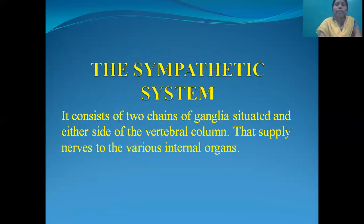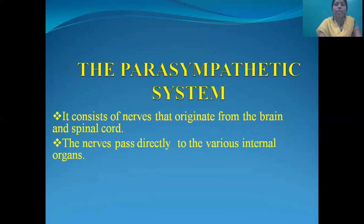The sympathetic system consists of 2 chains of ganglia situated on either side of the vertebral column that supply nerves to the various internal organs. The parasympathetic system consists of nerves that originate from the brain and spinal cord, and these nerves pass directly to the various internal organs.